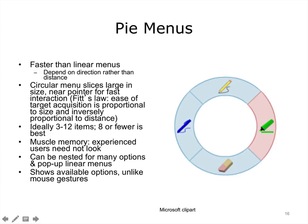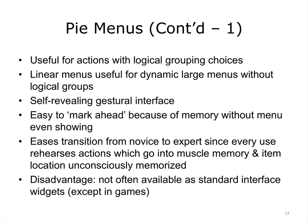Fitts' Law states that the ease of target acquisition is directly proportional to the size of the target and inversely proportional to the distance from the cursor. One reason pie menus can be fast is because, with practice, the user can retain the direction of menu items in muscle memory so that they need not even look at the menu. Multiple nested items can be selected in rapid sequence. Pie menus are most useful for actions with logical grouping and a limited number of items. One disadvantage is that outside of games, this type of menu is not often available in software.